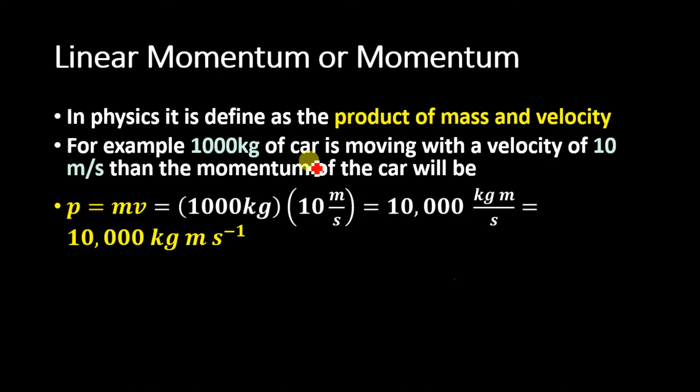Substituting the values for mass and velocity of the car and solving, we will get 10,000 kg meter per second. So the momentum of the car will be 10,000 kg meter per second. The unit of momentum is kg meter per second.